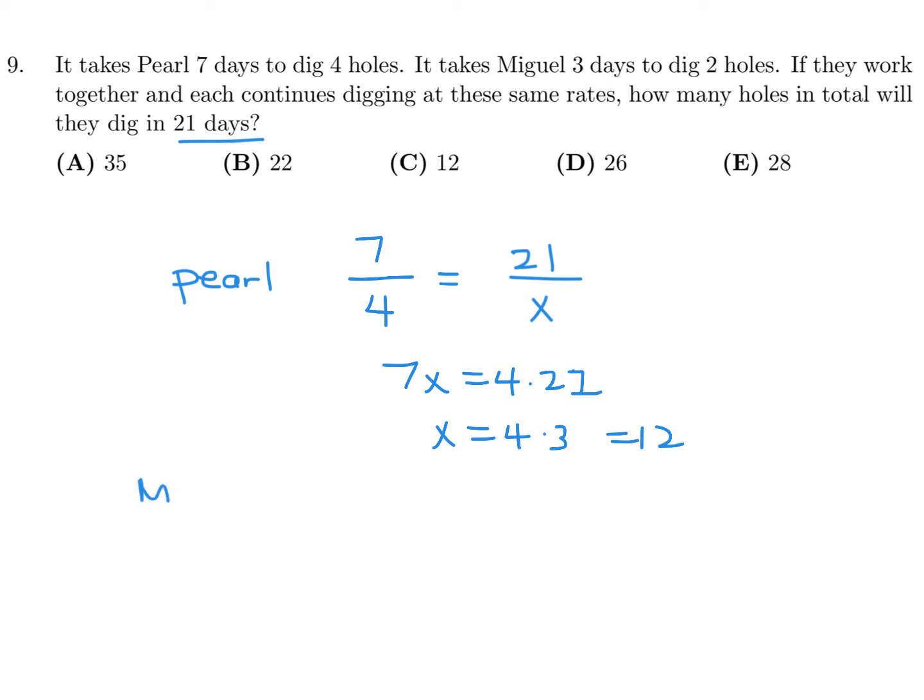And then let's do the exact same thing for Miguel. For Miguel, it's this time 3 and 2. That's the ratio. And then we're going to try to figure out for 21 days. And we're going to use y here. So that means we have 3y is equal to 2 times 21. And therefore, y is equal to 2 times 7, which is 14.